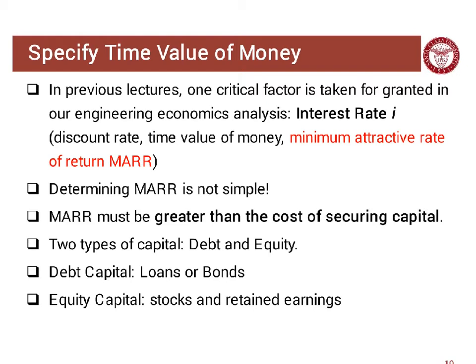The next step is to specify your time value of money, which we discussed before. Time value of money is a subjective thing — it differs from person to person because everyone secures capital for a project from different sources. You can secure capital from either debt or equity. Debt can come from loans and bonds, so based on your credit history you may get a better loan rate, which affects your time value of money.